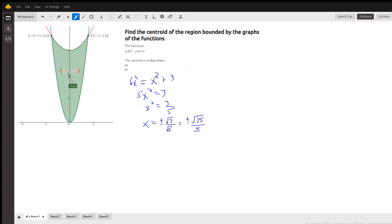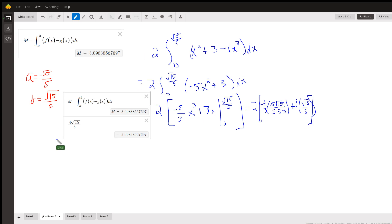First thing to do is to find the points of intersection. There are the x-coordinates of the points of intersection. To find the centroid, the first thing we have to do is find the area between the two curves.